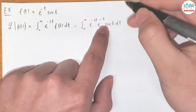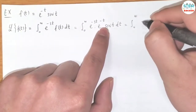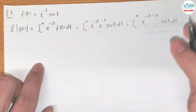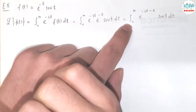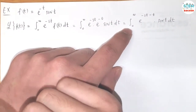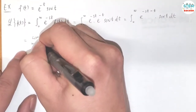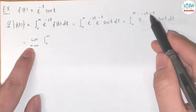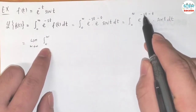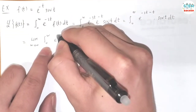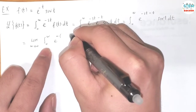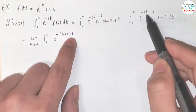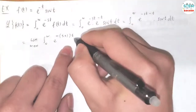Since we have the same base, we add the exponents together, which gives e^(-(s+1)t)·sin(t) dt. This is an improper integral, so we take the limit as w goes to infinity of the integral from zero to w. We factor out the negative t to write e^(-(s+1)t)·sin(t) dt.